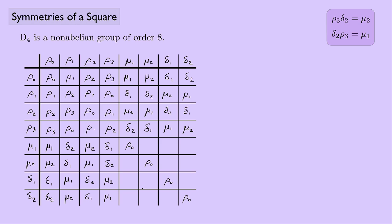Continuing to fill in the table: some entries are ρ₂, ρ₃, ρ₁, ρ₃, ρ₂, ρ₁, ρ₂, ρ₁, ρ₃, ρ₁, ρ₃. Using the constraint that each element appears exactly once per row and column allows us to deduce the remaining entries. I'll leave you to verify all of the entries in the table, remembering that each element should appear exactly once in every row and column.